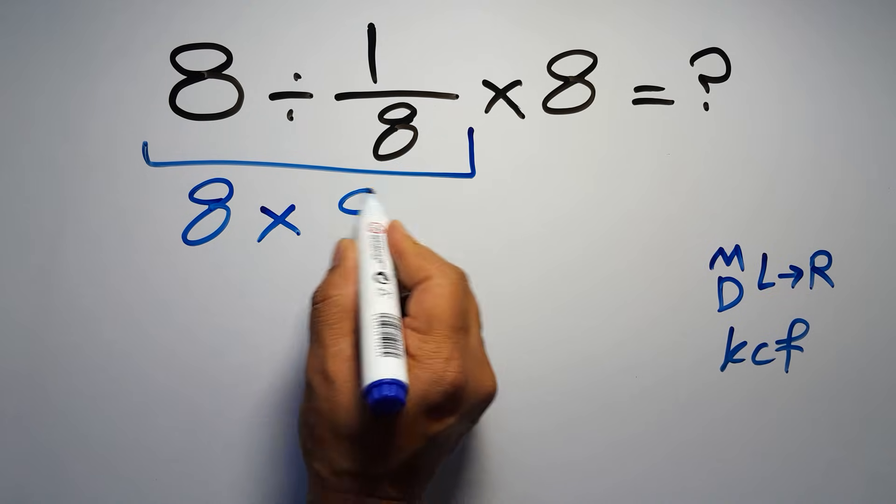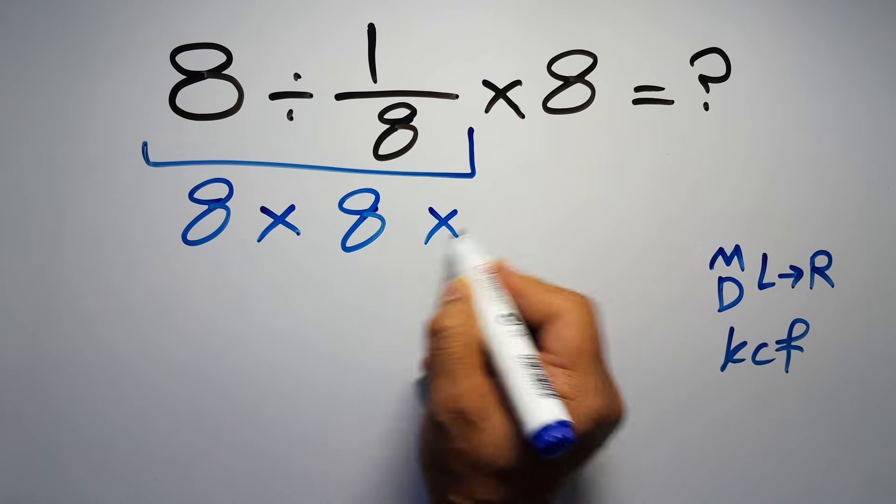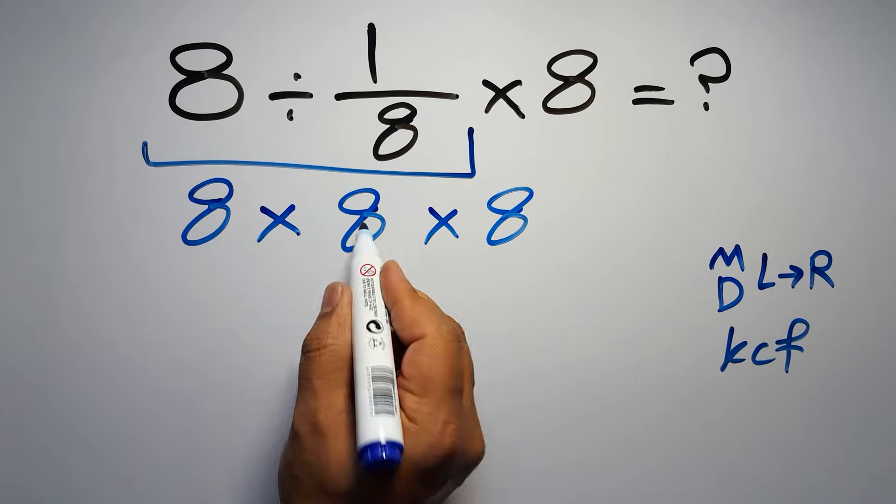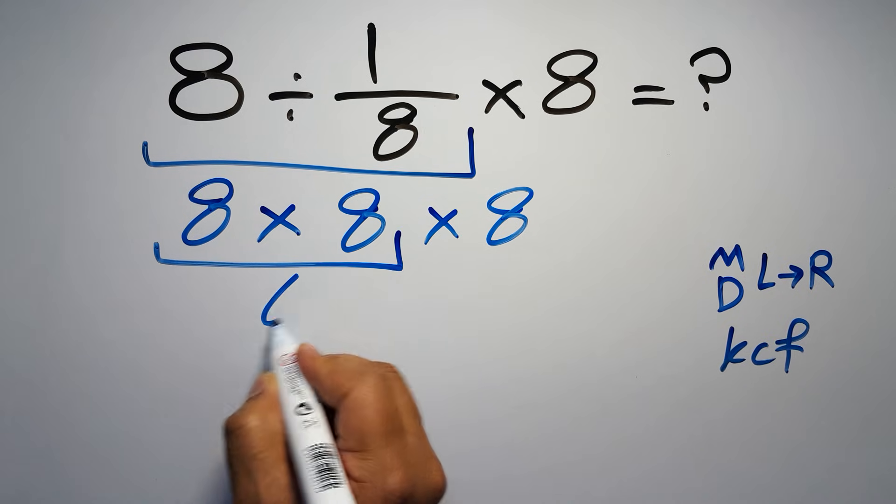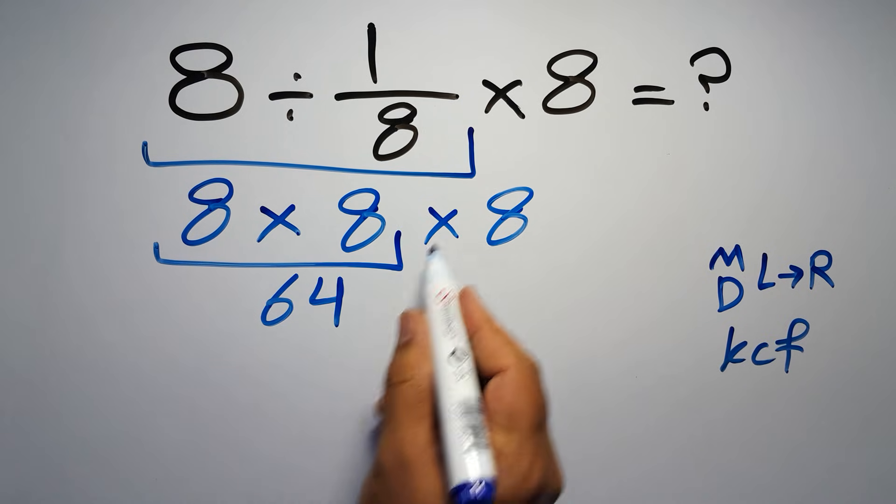And again, here we have times 8. 8 times 8 gives us 64, so 64 times 8.